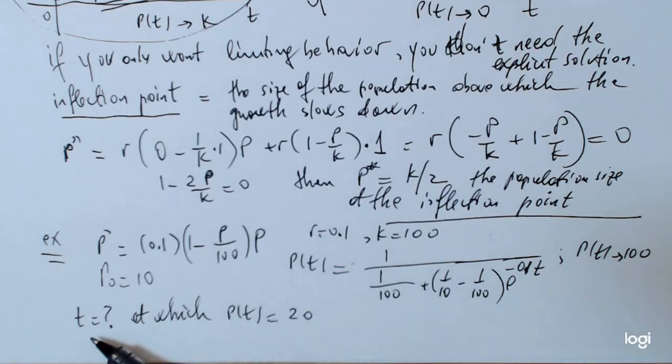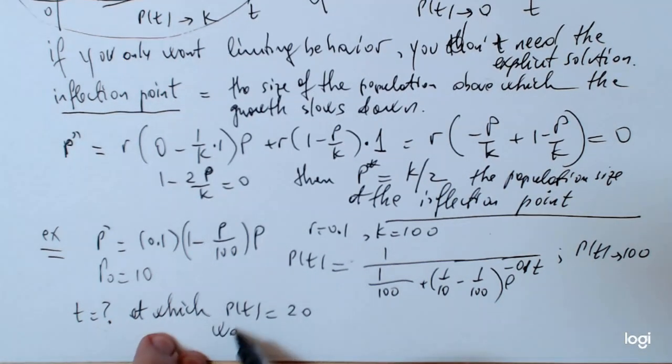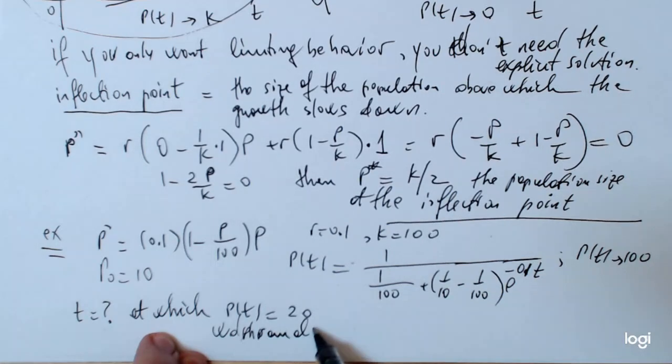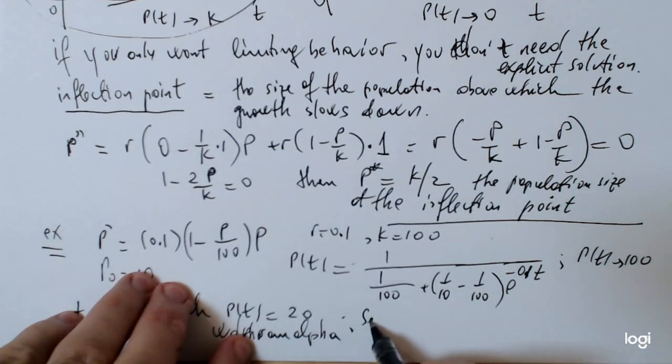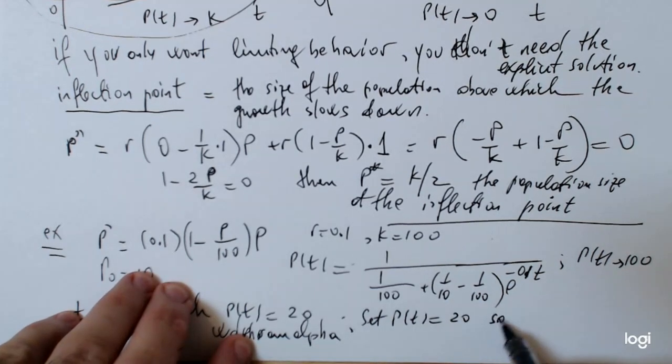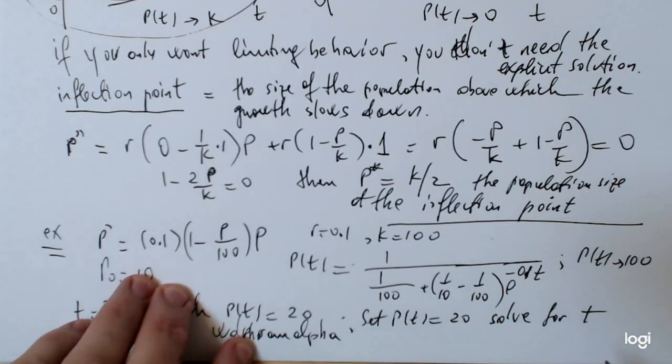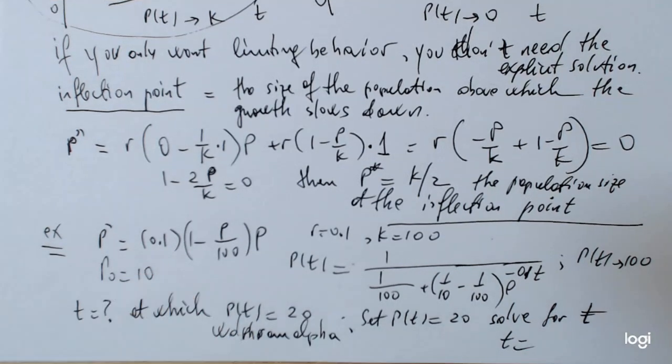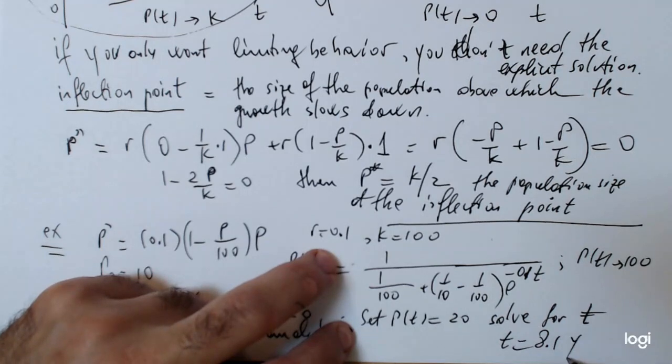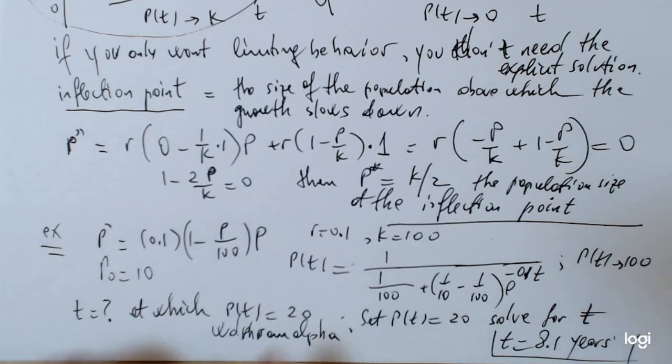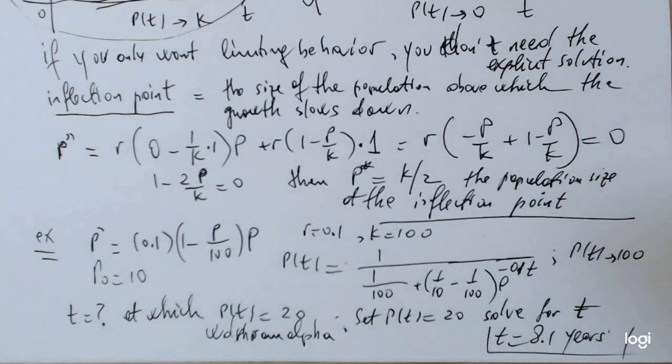If you cannot find the explicit solution, in general, it's not possible to tell what exactly the time is for a certain value of the population. You can talk about the limiting, what happens as t goes to infinity, but not the precise time. You can do this by hand, but you also need to use the calculator. You feel free to use Wolfram Alpha or any computer algebra system. So, if you set p of t equals to 20 and solve for t, in this particular example, you should end up with t equals 8.1 years. Assuming, of course, the time unit is given in years.